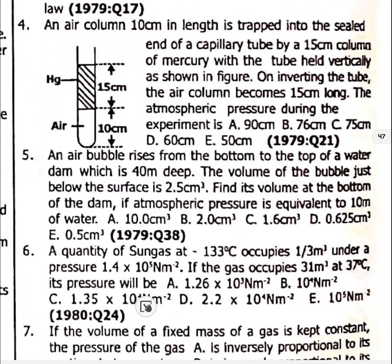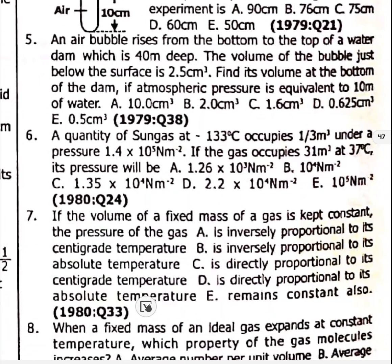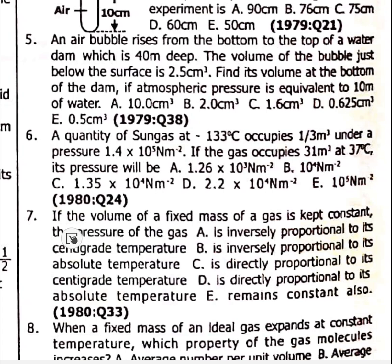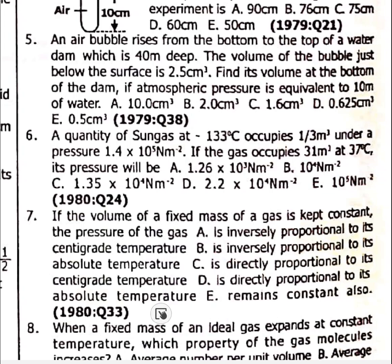Questions 5, 6, and 7 involve calculations. Question 7: If the volume of a fixed mass of gas is kept constant, the pressure will be directly proportional to its absolute temperature. Question 7 is option D.